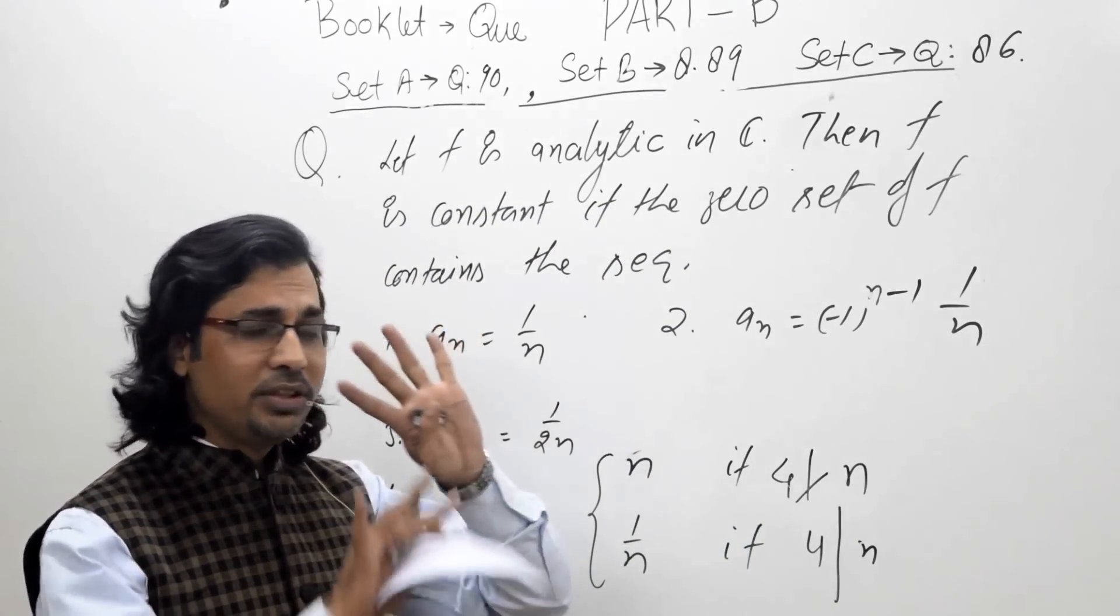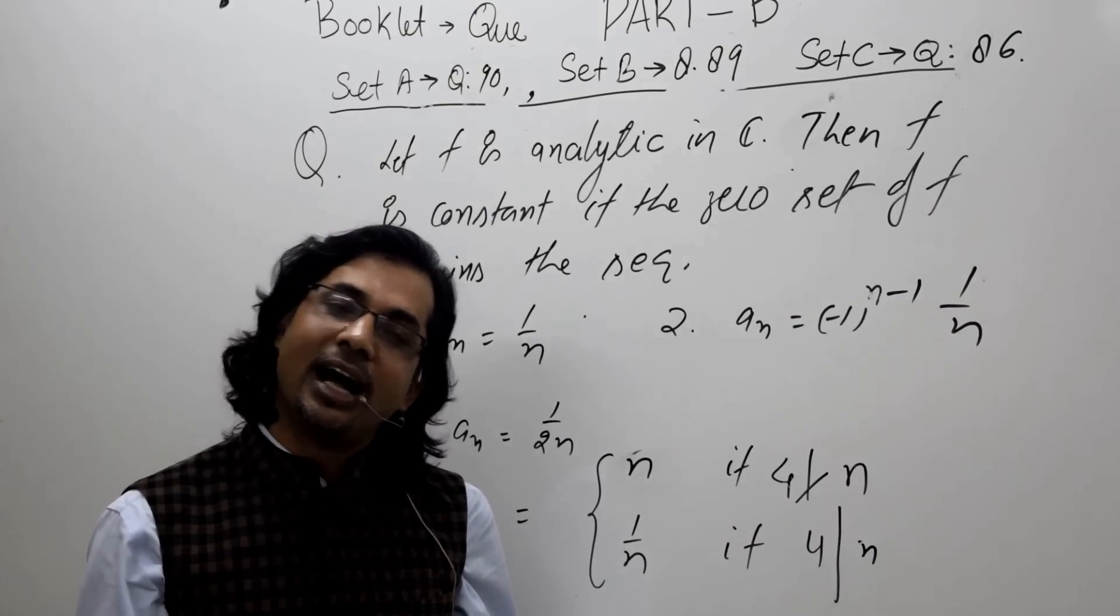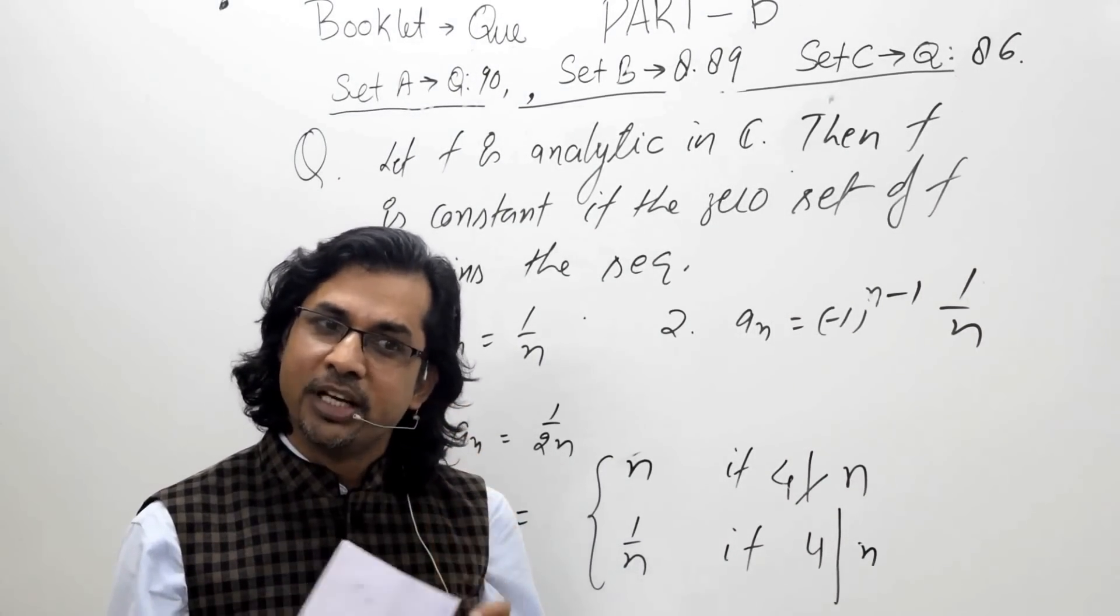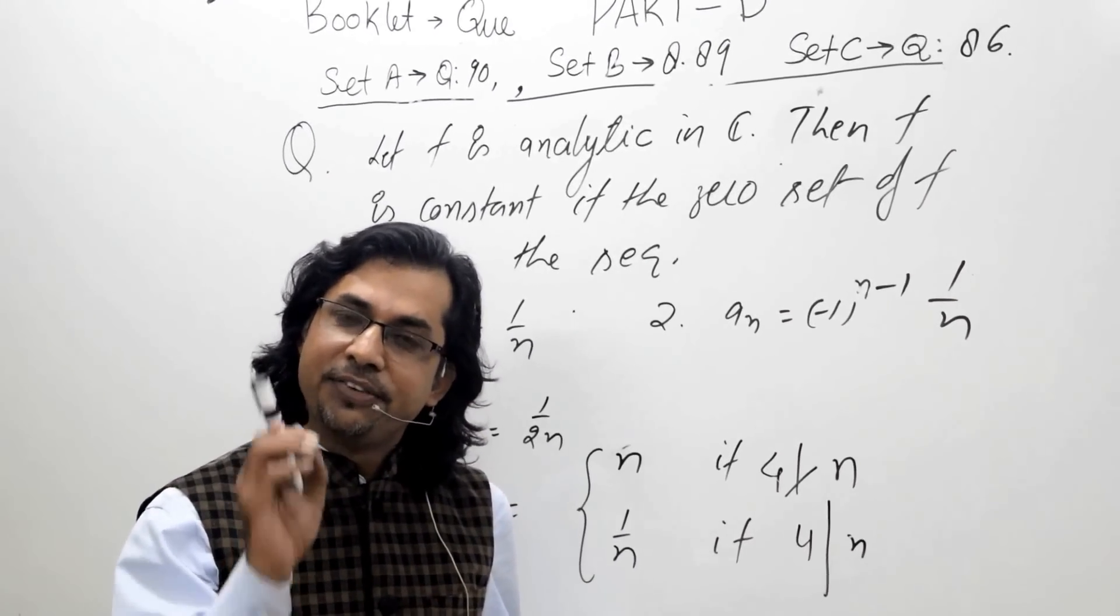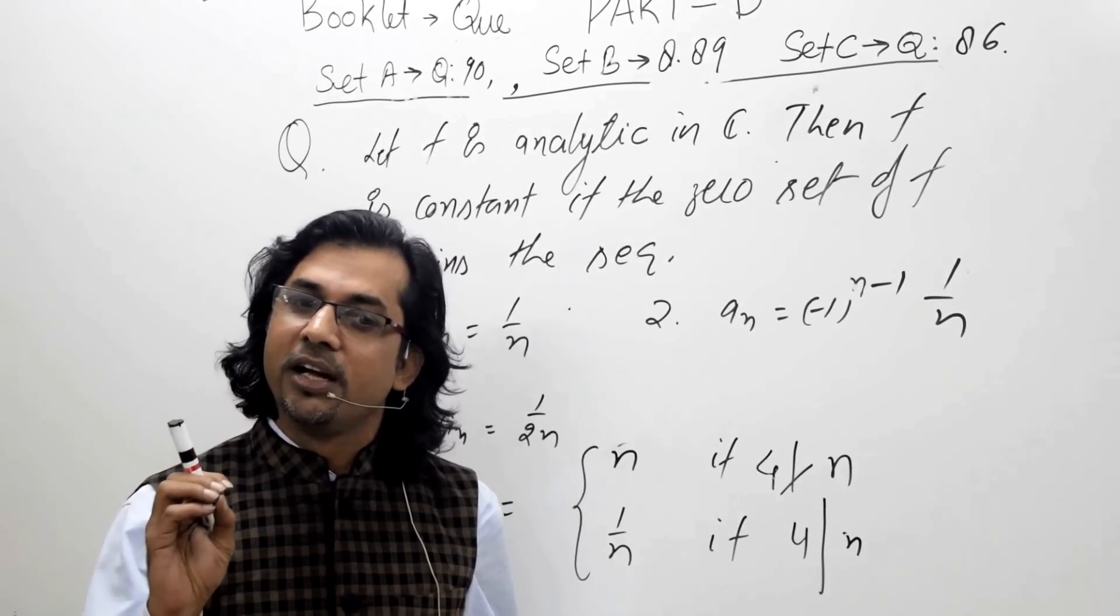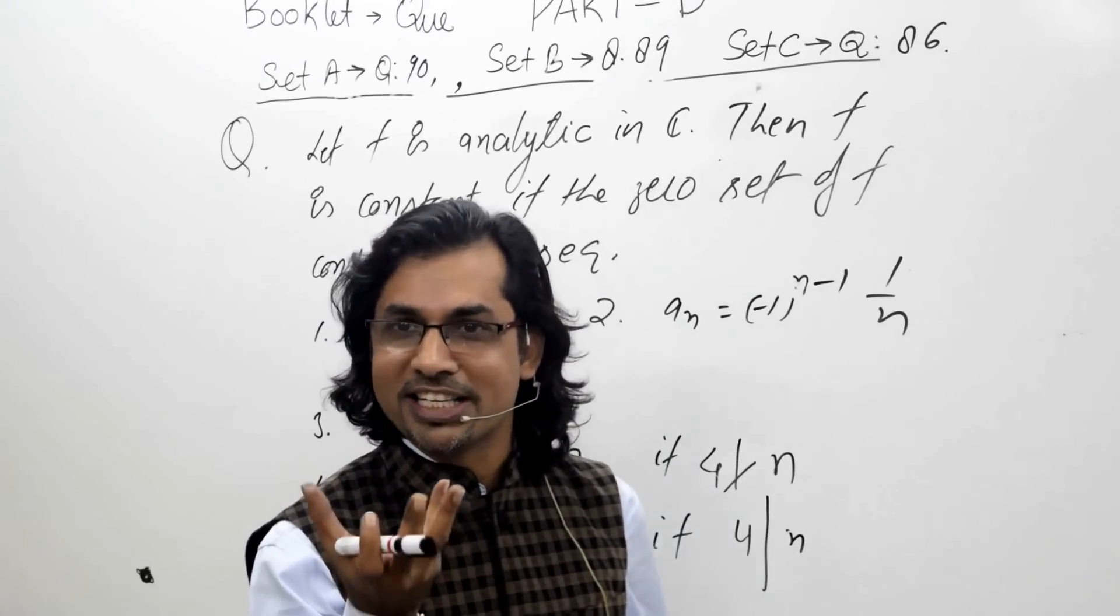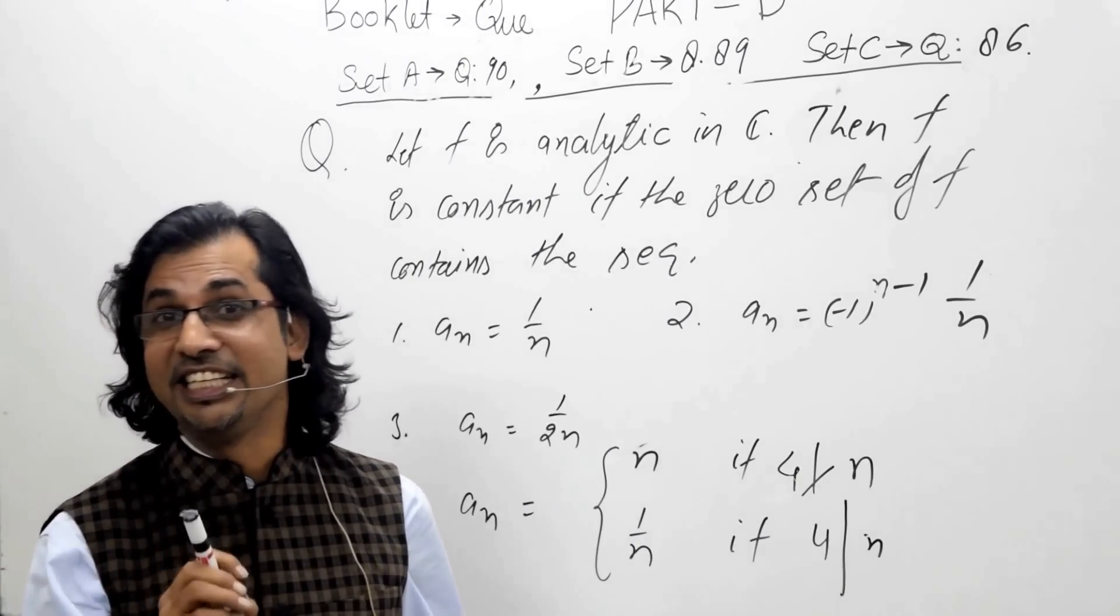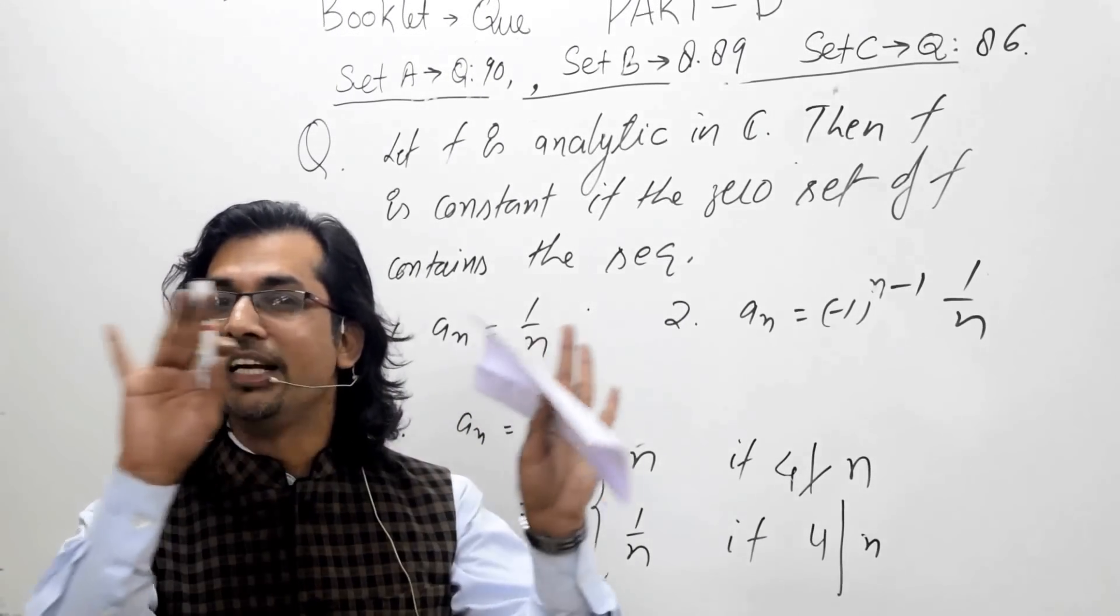Now, the essence of this question is the identity theorem. This is a very popular theorem in complex analysis. Identity theorem says if an entire function is 0 on a set which has a limit point in C, then the function is identically 0.